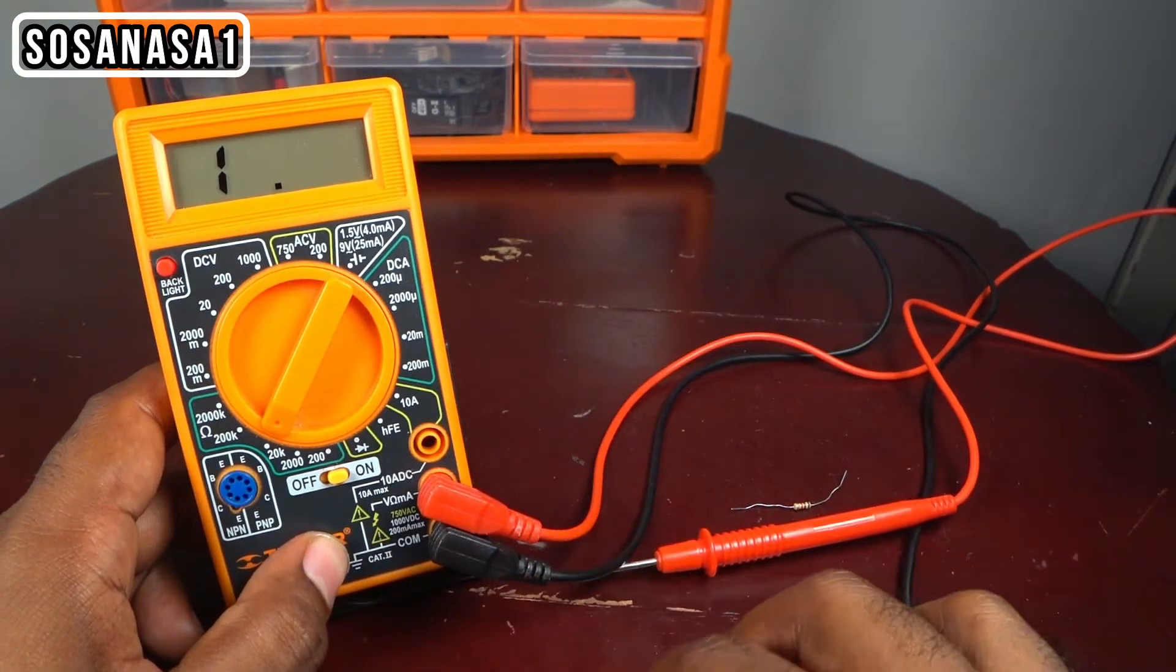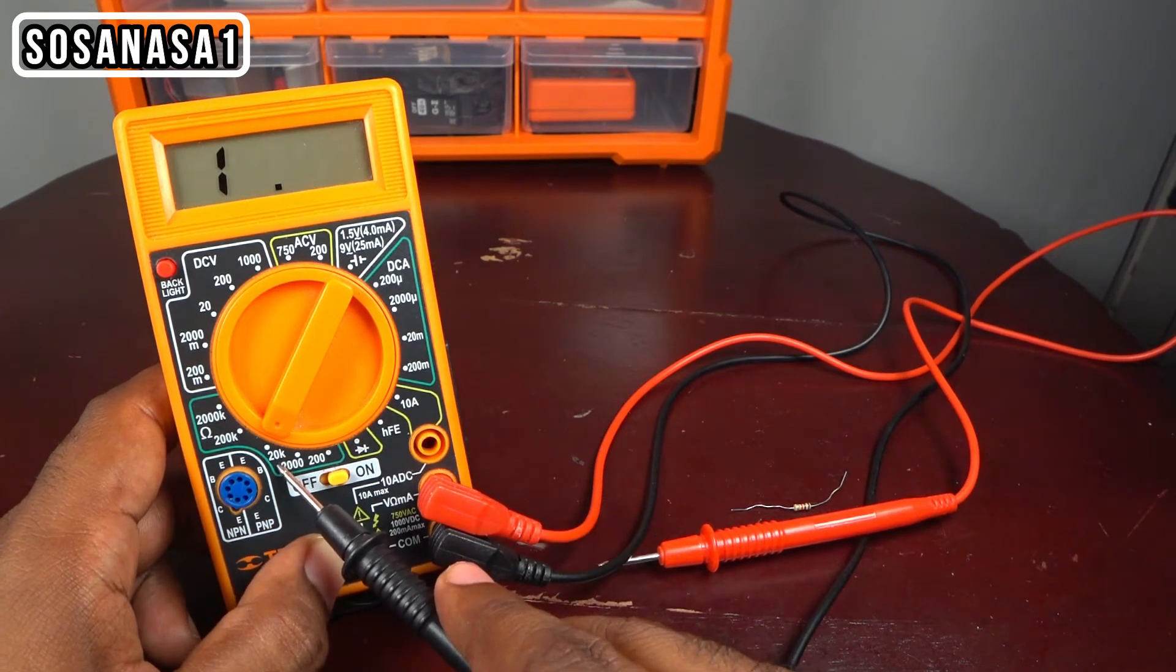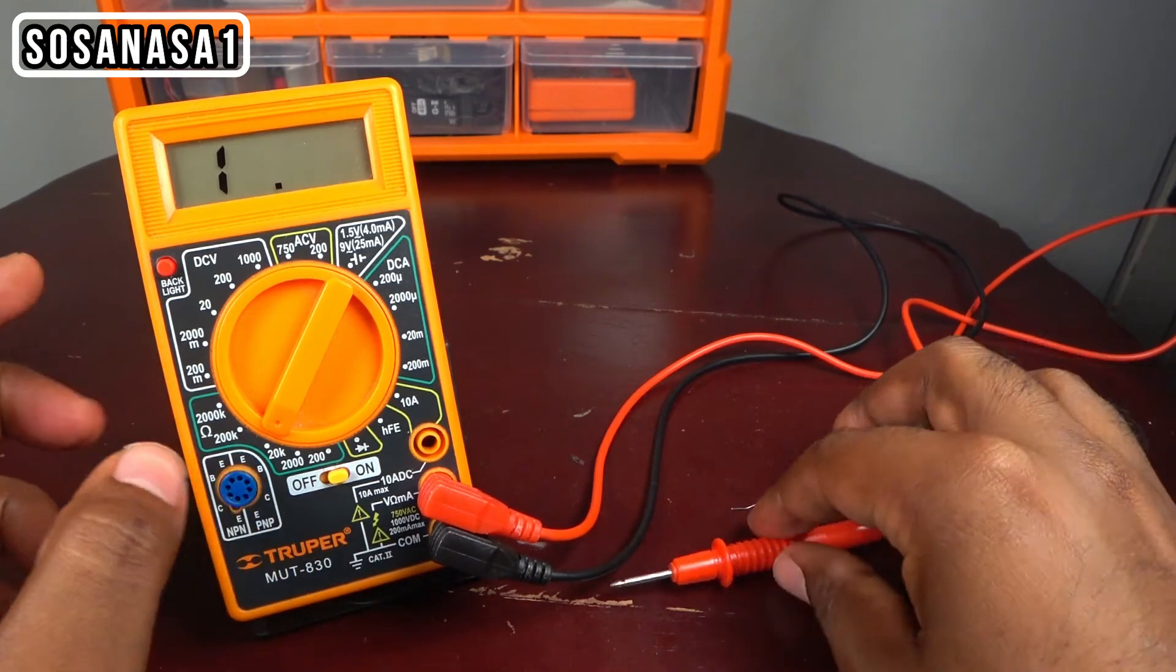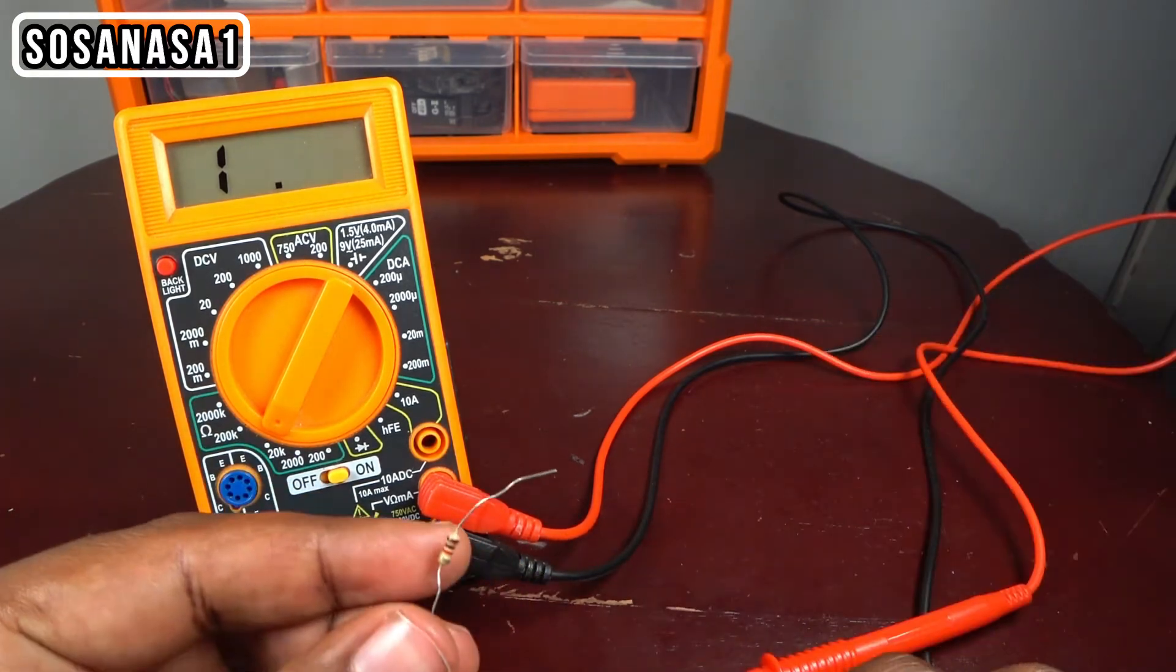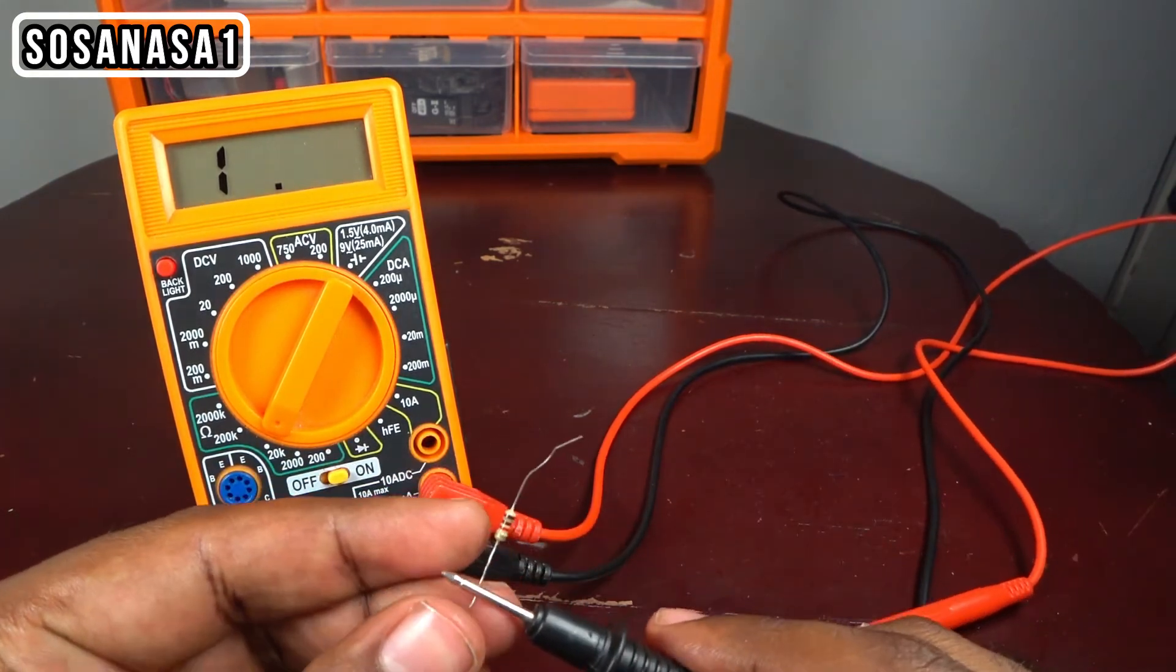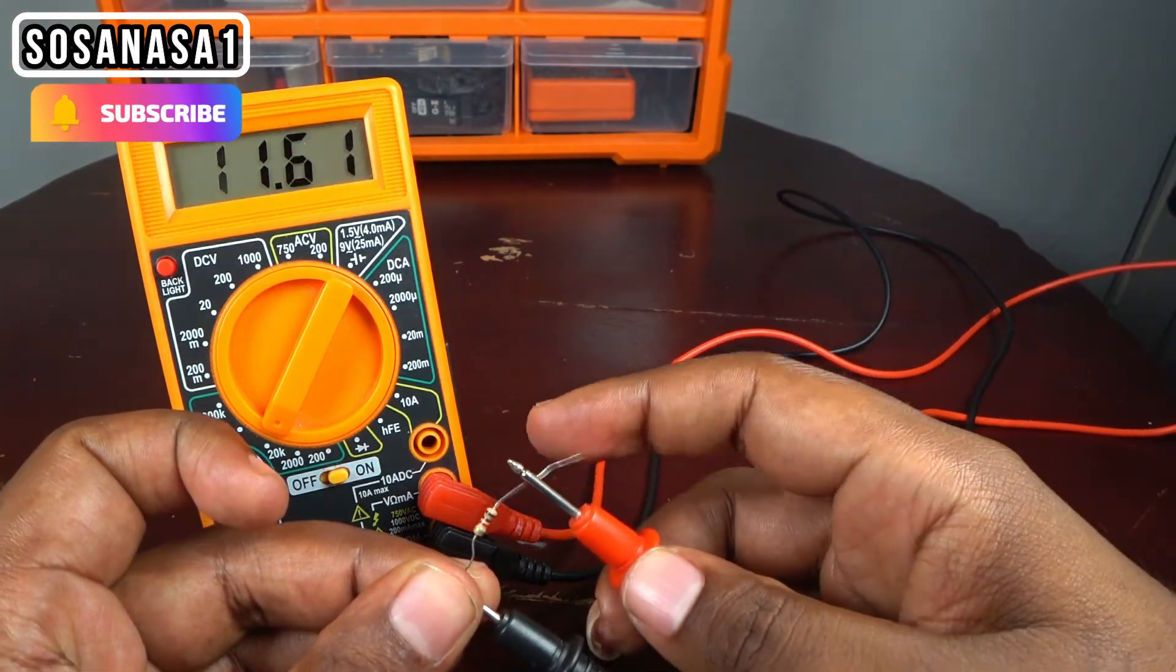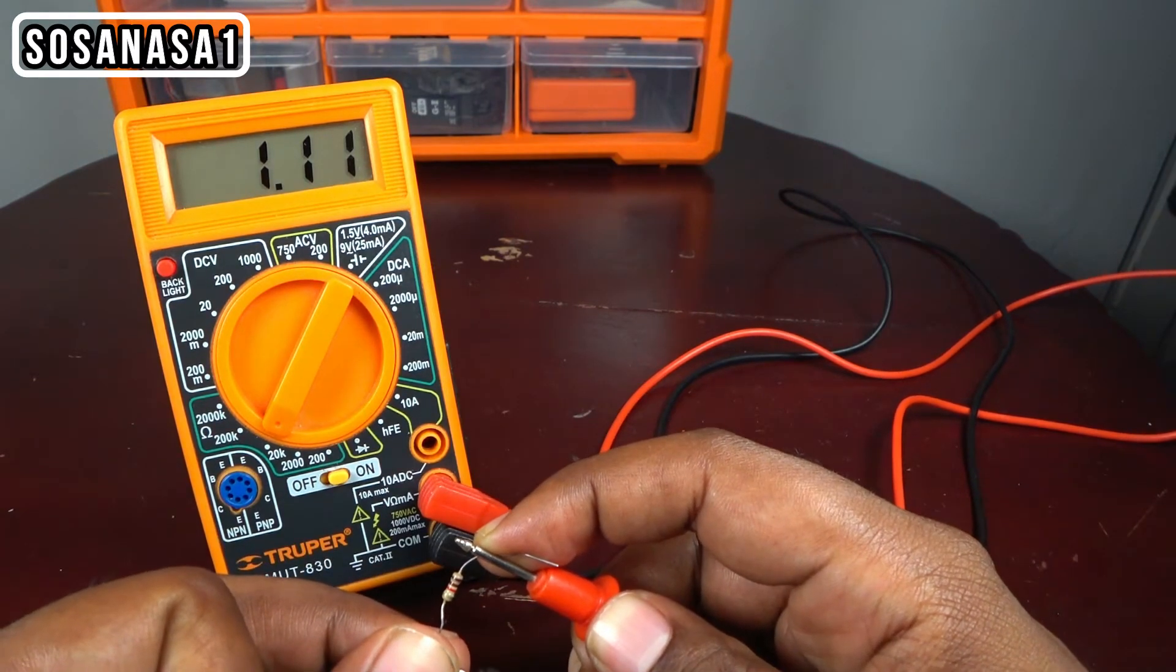You can put this in this position. This is 20 kilo ohms. And now we will measure this resistance. Put this in this position and this in this position, and now you can see on the screen.